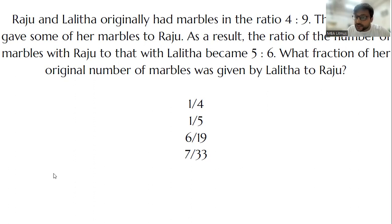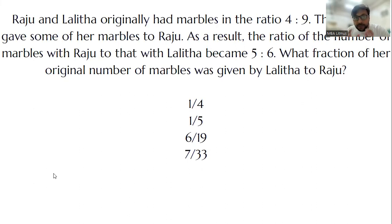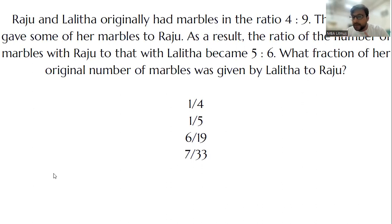Try it once, and then when you have a solution, you will enjoy it. Raju and Lalita originally had marbles in the ratio of 4 is to 9. Then Lalita gave some of her marbles to Raju. As a result, the ratio of the number of marbles with Raju to that of Lalita became 5 is to 6. What fraction of her original number of marbles was given by Lalita to Raju?